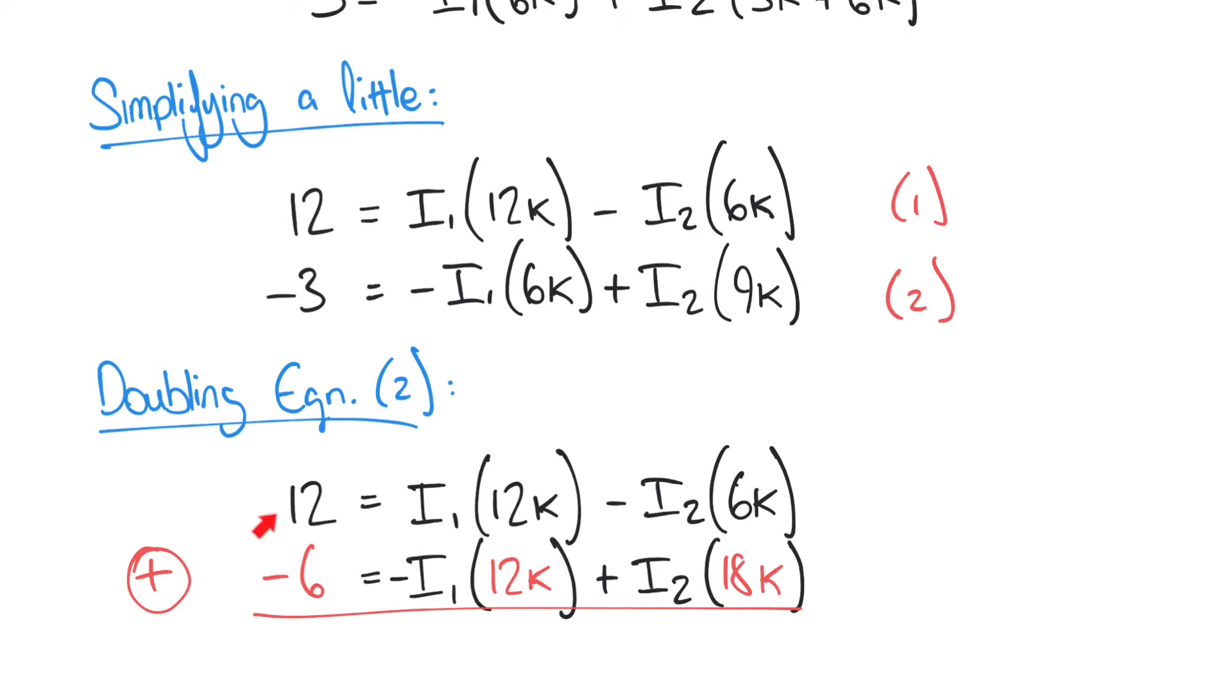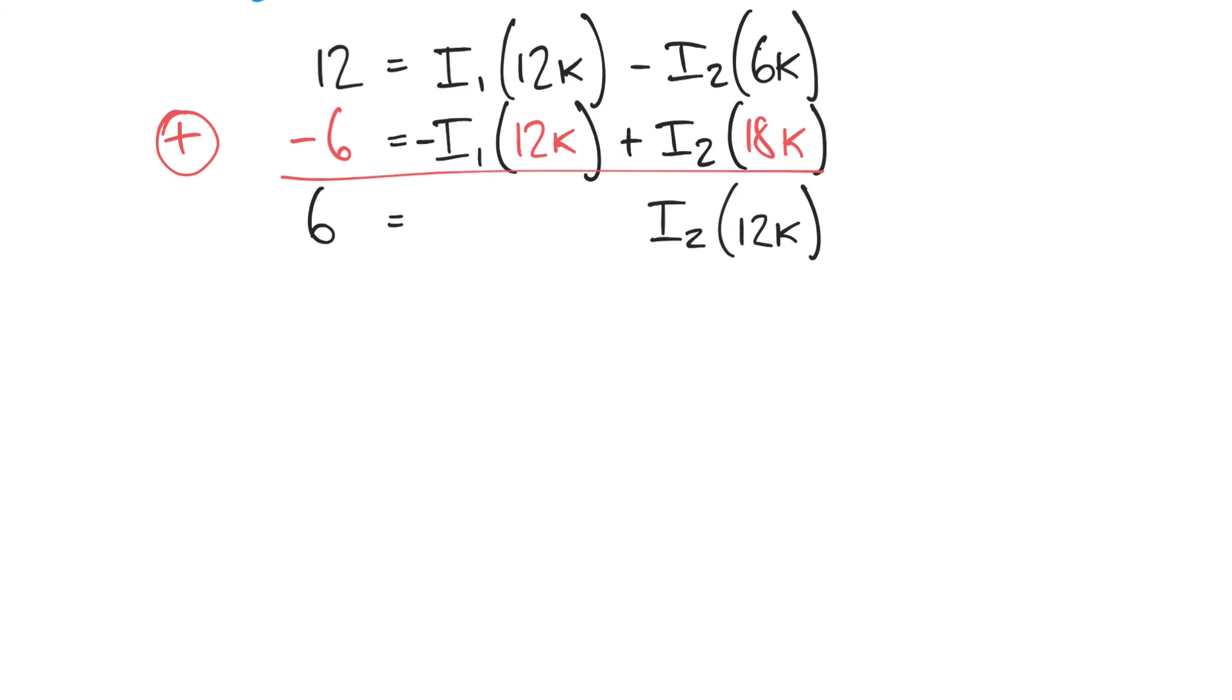So 12 plus minus 6 is going to give us 6. These I1 terms cancel, they disappear. And these I2 terms are going to add up to give us I2 times 12k. And so just a little bit of rearrangement really. 12k representing 12,000 obviously, we can rearrange to say I2 equals 6 divided by 12,000. And that gives us 0.0005 amps, or better yet, 0.5 milliamps.